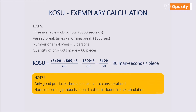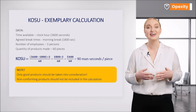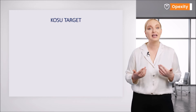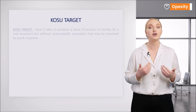It is also worth noting that in the example shown, all the items produced were of good quality. Otherwise, we should enter only good products, resulting in an increase in the Kosu indicator. We should show the quality losses. As we can see, it is easy to calculate Kosu in terms of an hour. Kosu is, after all, an indicator, so it must have a target, which is called the Kosu target. We will have to set this target.